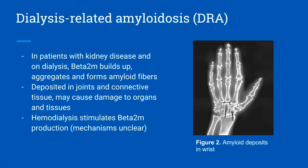Dialysis-related amyloidosis, or DRA, results in patients that are undergoing dialysis who have kidney disease, where this protein builds up and forms aggregates that further deposit in amyloid fibers in the joints and connective tissues, which furthermore cause organ and tissue damage. Hemodialysis is also known to stimulate the production of this protein.